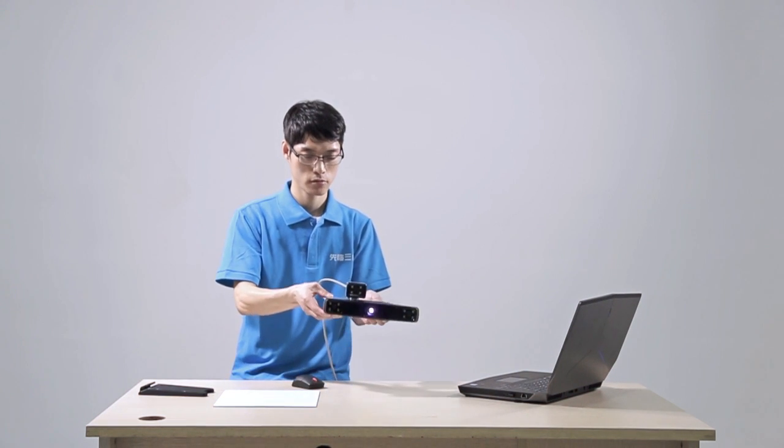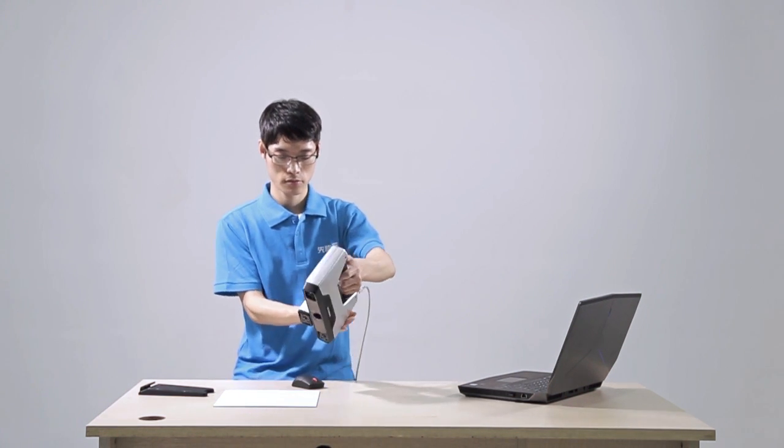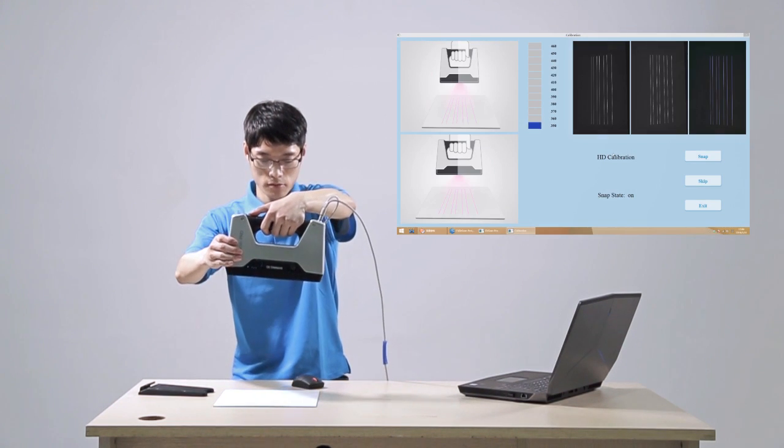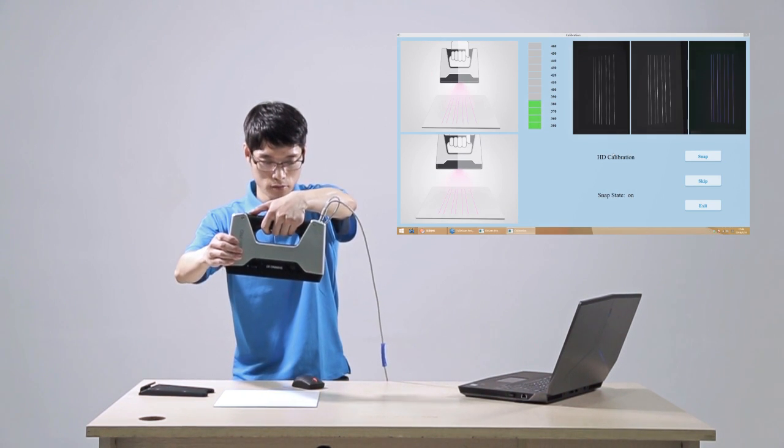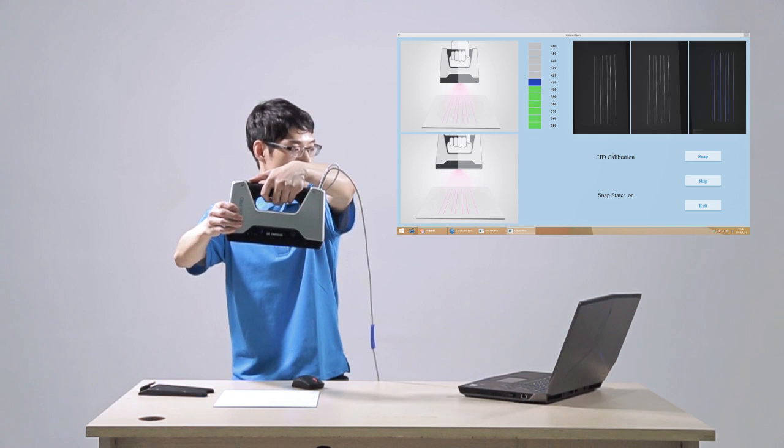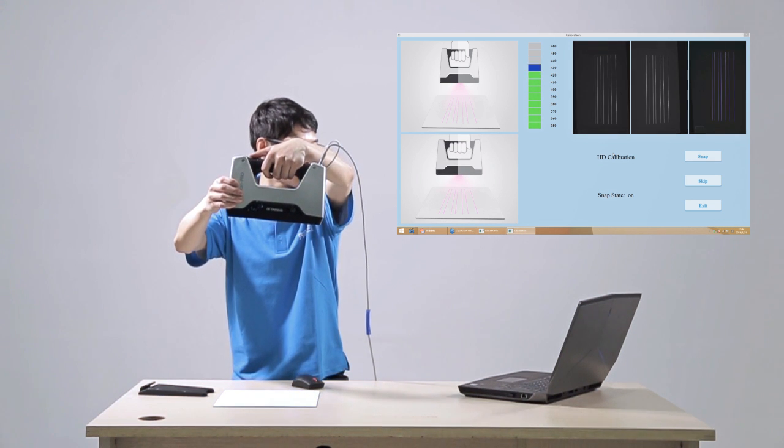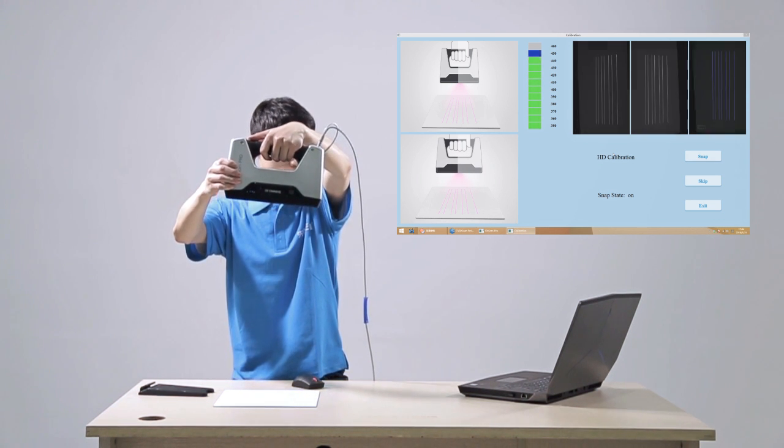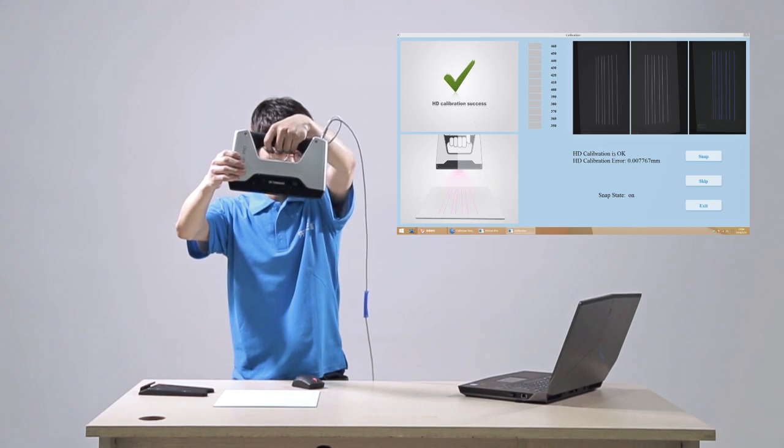Press the start button on the scanner to turn on capturing, so the snap state on the software turns to on. Hold the scanner moving up and down until all the boxes on the software turn green.